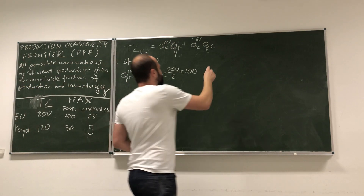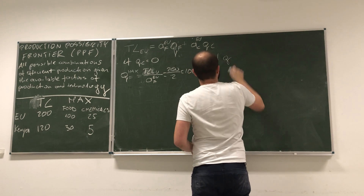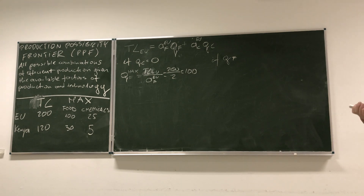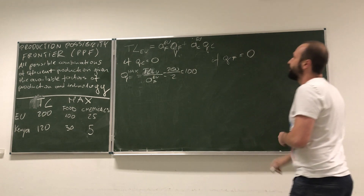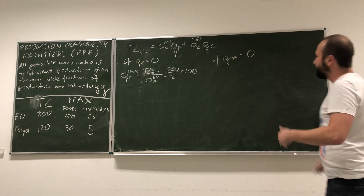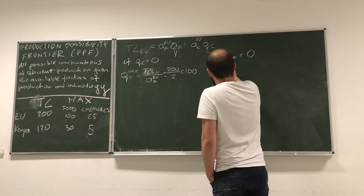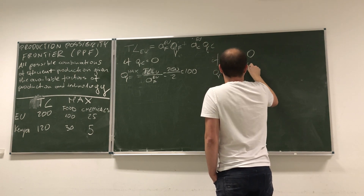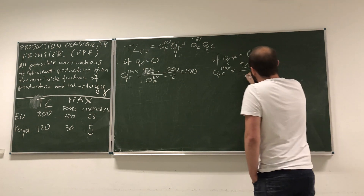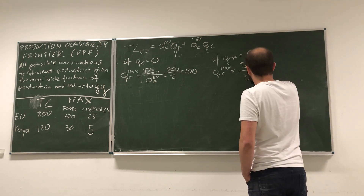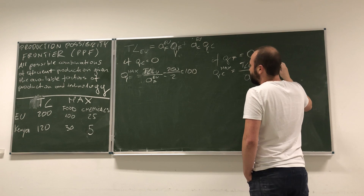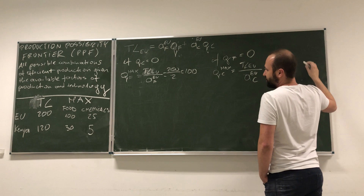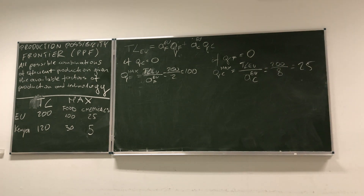And now if we do the same thing for food — that is, we assume we are not producing food — we get the maximum amount of chemicals, which is TL_EU divided by the labour requirement for chemicals, giving us 200 divided by 8, which is 25.